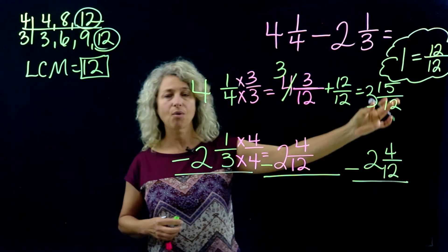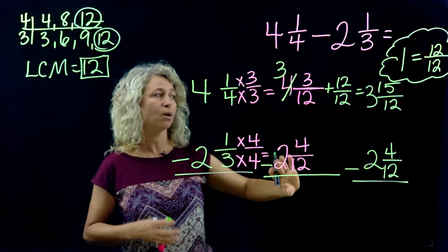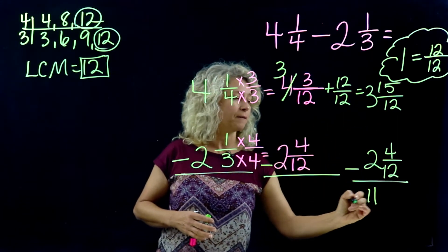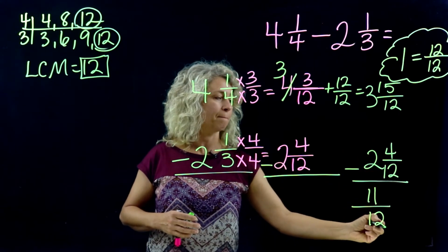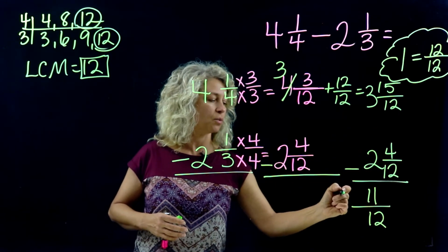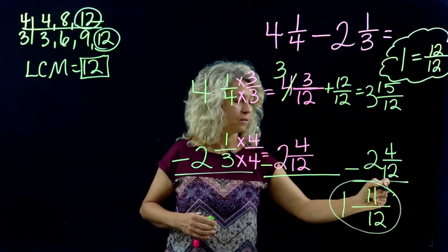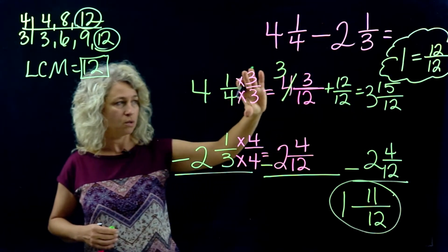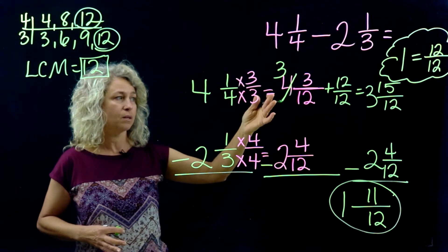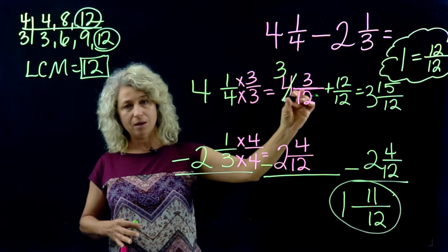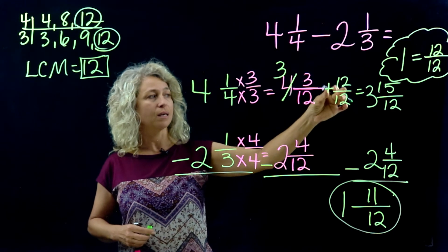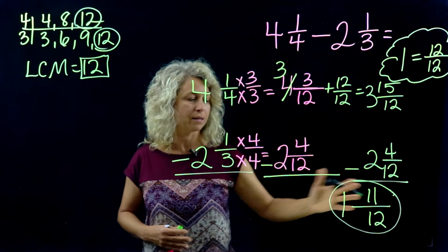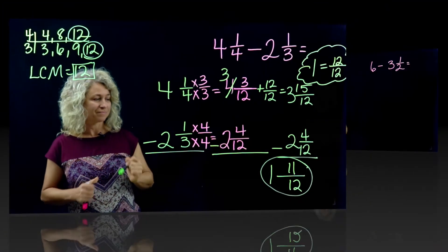Fifteen minus 4 is 11, the denominator stays the same. Three minus 2 is 1. So now here is our final answer: 1 11/12. This part right here is your most difficult part. When renaming, you just remember whatever the denominator is, it has to be on the top and the bottom to mean the whole number 1, and you're adding it back so that you can subtract.